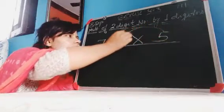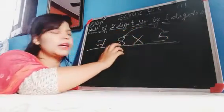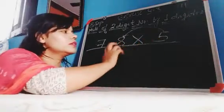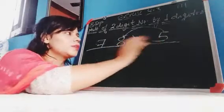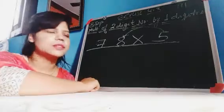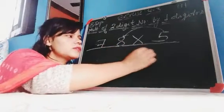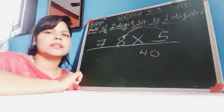If you multiply this number, then you know the table, 5 eights are 40. This 40, we don't write here.